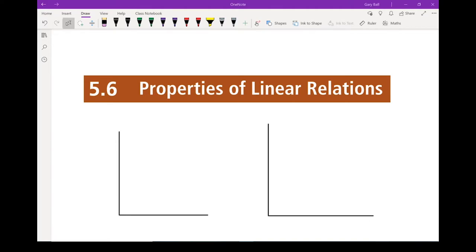5.6. Properties of linear relations. Let's make sure we're clear exactly on what we're talking about when we're talking about linear relations. A linear relation on a graph will produce a straight line. For example, that's a linear relation. That is not. Linear, not linear. The definition of a linear relation is it has a constant rate of change. As we move forward, this one goes down by the same amount. This one changes. It's got a different slope all the way through.